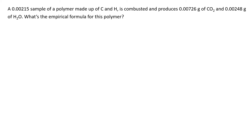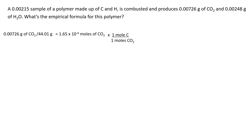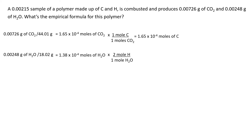Approach this the same way as the other examples. You have grams of carbon dioxide, and you're trying to find out how many carbons are in this polymer. Take the grams of carbon dioxide, find the moles, then use the stoichiometric relationship between carbon and carbon dioxide to find moles of carbon — the moles of CO2 cancel out, leaving you with moles of carbon. Do the same with grams of water: convert to moles of H2O, then use the stoichiometric factor — there are two moles of hydrogen for every mole of water — to get moles of hydrogen.